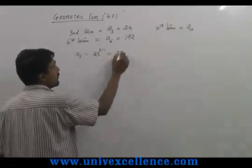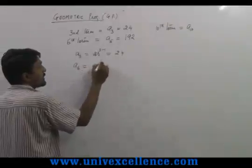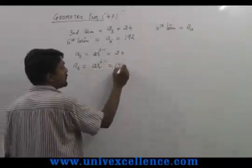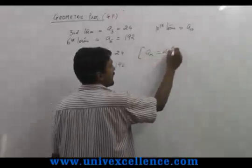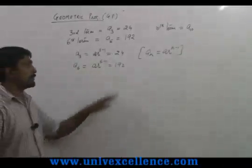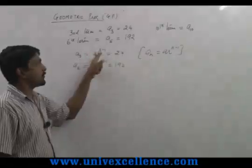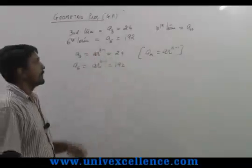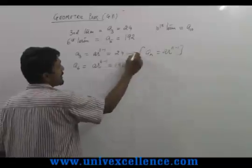a6 equals a times r to the power 6 minus 1, which is 192. We are using the formula an equals a times r to the power n minus 1, the nth term formula. Here n is 3, so we put 3 in place of n. Now we divide the first and second equations.